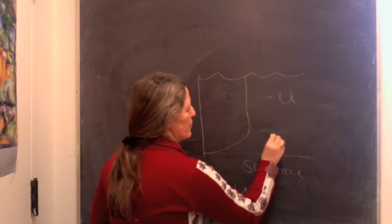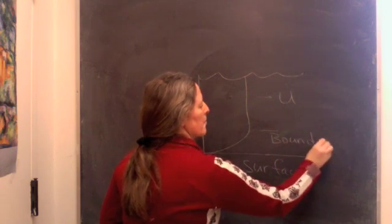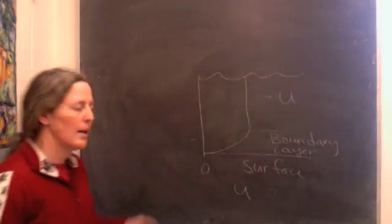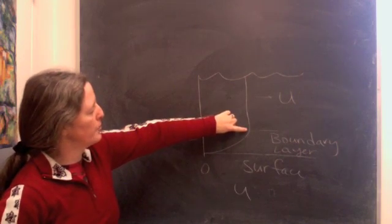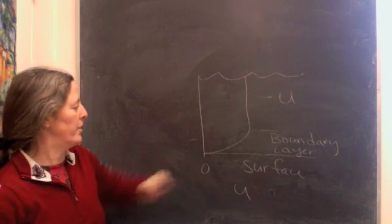This is what we define as the boundary layer—the zone where the flow speed is decreased because of interaction and friction with the surface.